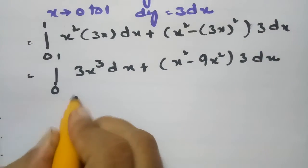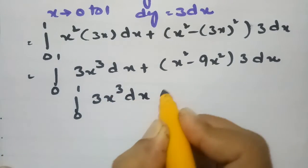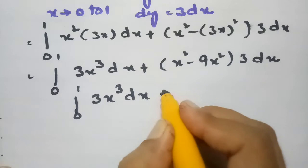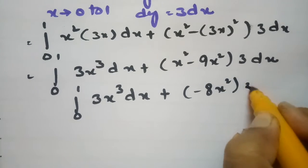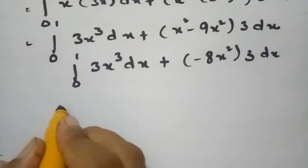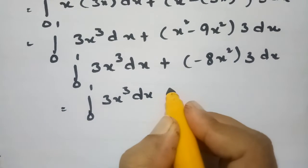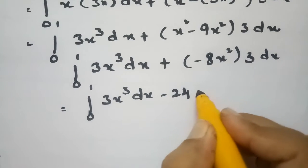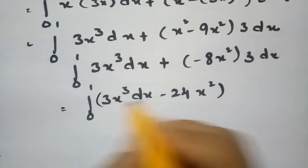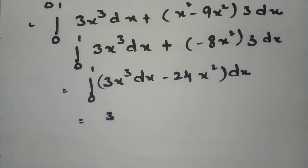This simplifies to the integral from 0 to 1 of 3x³ dx plus (x² minus 9x²) times 3 dx. Since x² minus 9x² equals minus 8x², this becomes 3x³ dx minus 24x² dx.